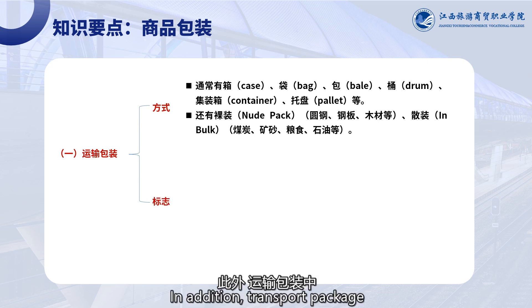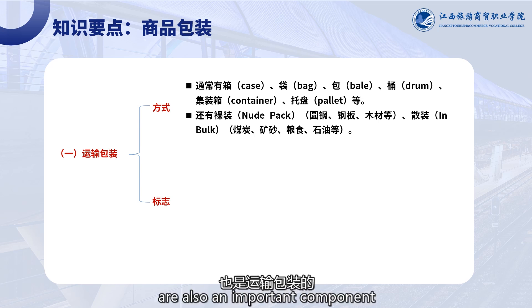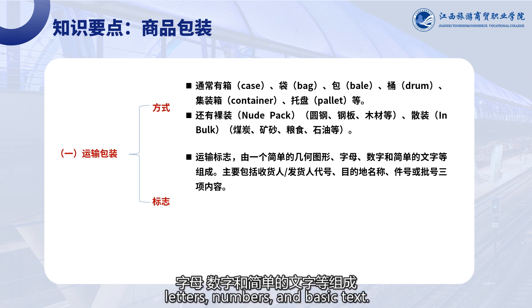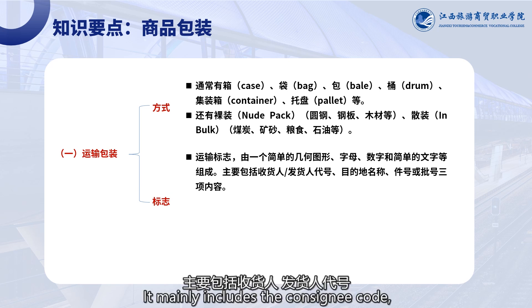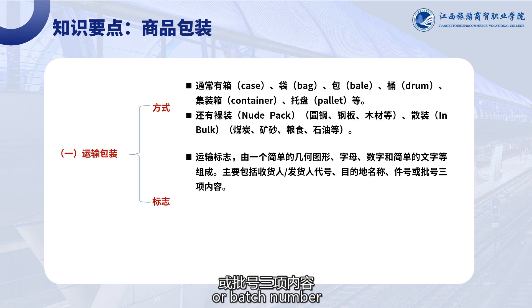In addition, transport package includes shipping marks, which are also an important component of transport package. A shipping mark consists of simple geometric shapes, letters, numbers, and basic text. It mainly includes the consignee code, consigner code, destination name, package number, or batch number.